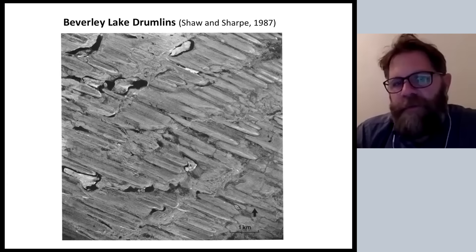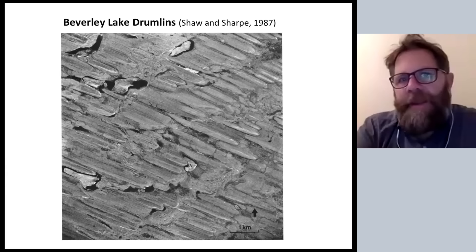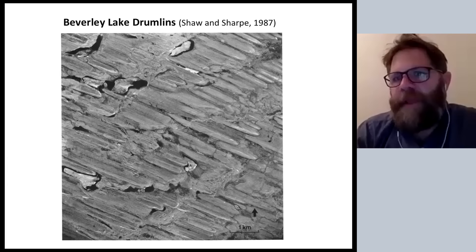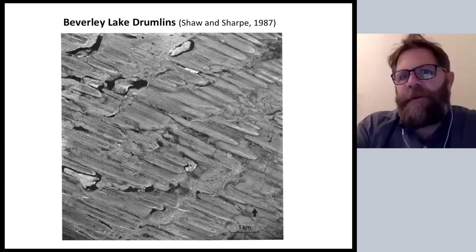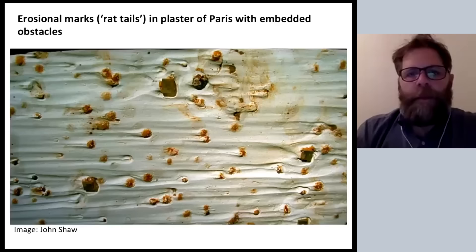A lot of the build-up of this meltwater hypothesis was driven in part by the bedrock sculpted forms and the recognition that there were lots of form similarities between the bedrock forms and much larger drumlins not made of bedrock. The implication being that if each one of these records the presence of a horseshoe vortex, it basically implies that this entire landscape is potentially flooded and forms underwater.